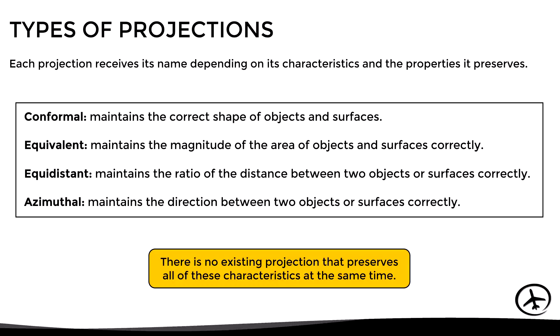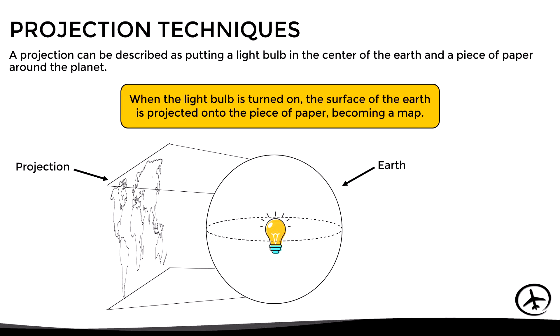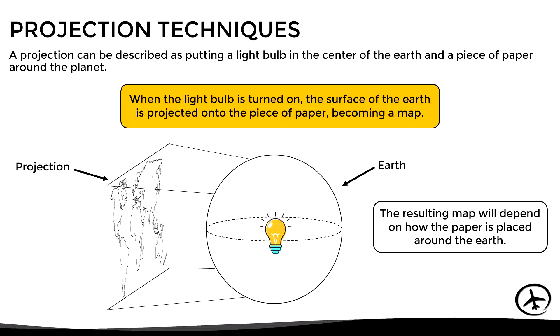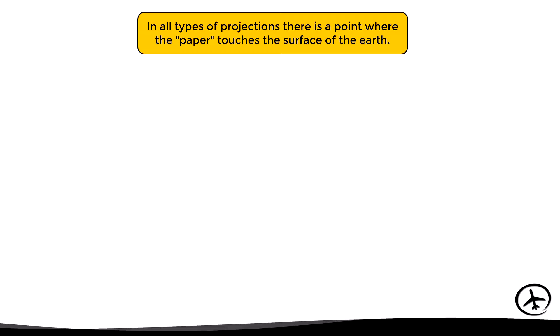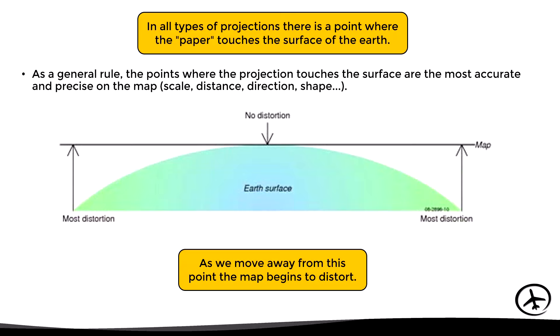It must be decided which features are most important to include depending on the map's purpose. To understand how a projection is developed, imagine putting a light bulb in the center of the earth and a piece of paper around the planet. When the light bulb is turned on, the earth's surface is projected onto the paper, becoming a map. The resulting map depends on how the paper is placed around the earth. In all projection types, there are one or more points where the paper touches the earth's surface, and these points are the most accurate in terms of scale, distance, direction, and shape. As we move away from these points, the map begins to distort.